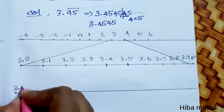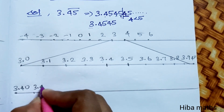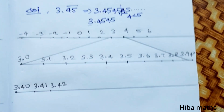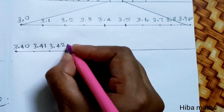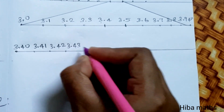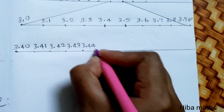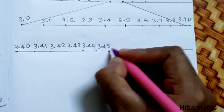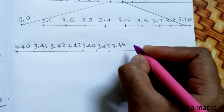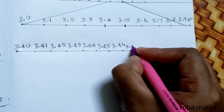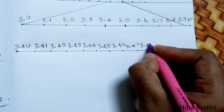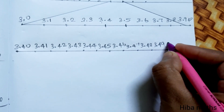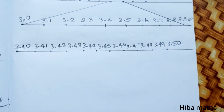Now subdivide between 3.40 and 3.50. Add lines for: 3.40, 3.41, 3.42, 3.43, 3.44, 3.45 — this is the point. Continue: 3.46, 3.47, 3.48, 3.49, 3.50.